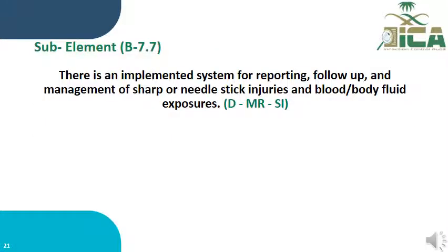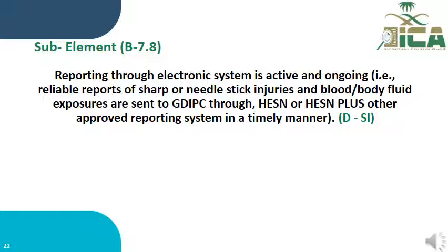Sub-element B7.7 states there must be an implemented system for reporting, follow-up, and management of sharp or needle stick injuries and blood and body fluid exposures. Assessment includes document review, medical record review, and staff interview. Sub-element B7.8 addresses active and ongoing reporting through electronic systems — such as HESSN or HESSN Plus — sending reliable reports of sharp or needle stick injuries and blood and body fluid exposures to the General Directorate of Infection Prevention and Control in a timely manner. Assessment includes document review and staff interview.